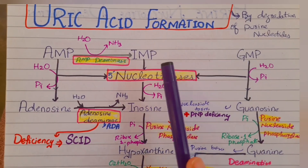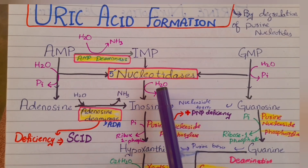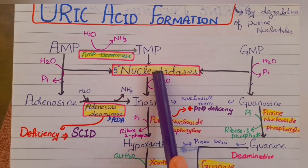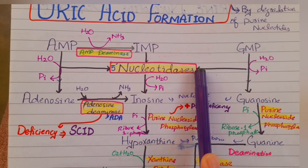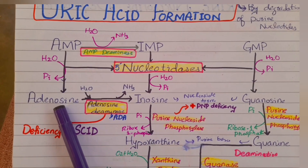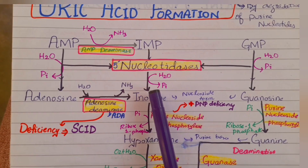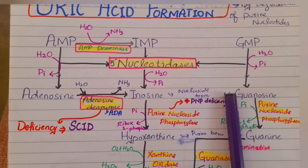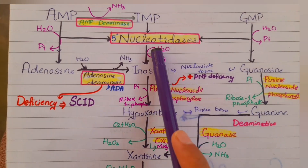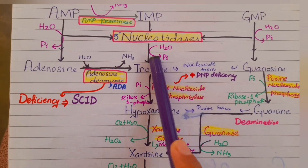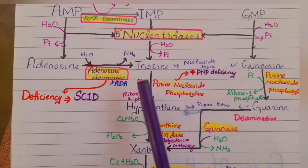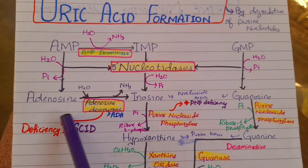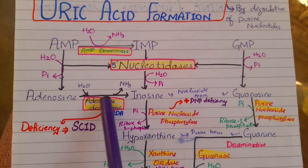In the second step, AMP, IMP, and GMP can be converted into their nucleoside forms in the presence of the enzyme 5' nucleotidase. AMP will be converted to adenosine, IMP to inosine, and GMP to guanosine. In these steps, water is used and the phosphate group is released.